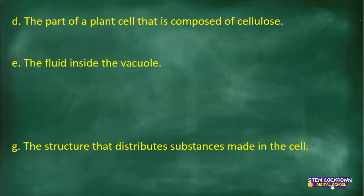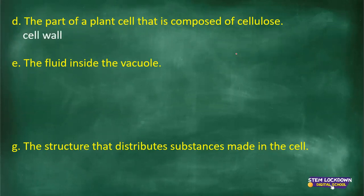The part of a plant cell that is composed of cellulose — we discussed this in the beginning, we even did the Kahoot on it. The answer is the cell wall. Cellulose is found in the cell wall.